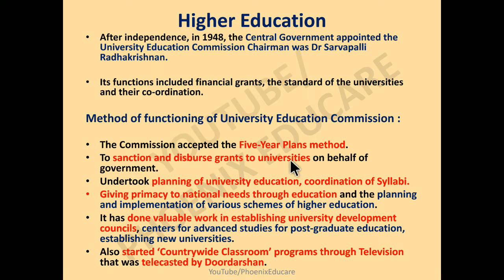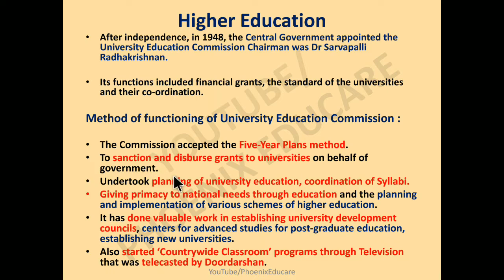The second method was to sanction and disperse the grants of universities. If any university needed money, the University Education Commission would sanction and approve the amount. The government gave them the authority to distribute the money on behalf of government.